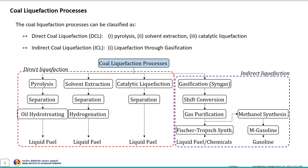Coal liquefaction processes are classified as direct coal liquefaction and indirect coal liquefaction. Direct coal liquefaction is further subclassified as pyrolysis, solvent extraction, and catalytic liquefaction. Direct coal liquefaction refers to the direct thermochemical conversion — or hydrogenation — of coal at relatively high temperature and pressure to produce liquid fuel as a product.